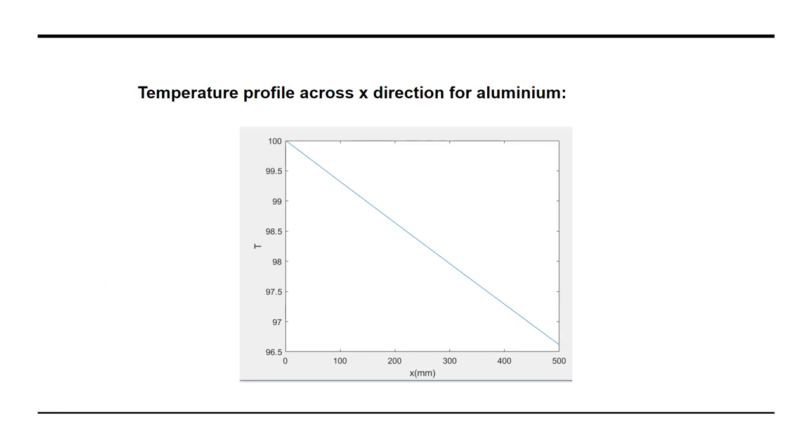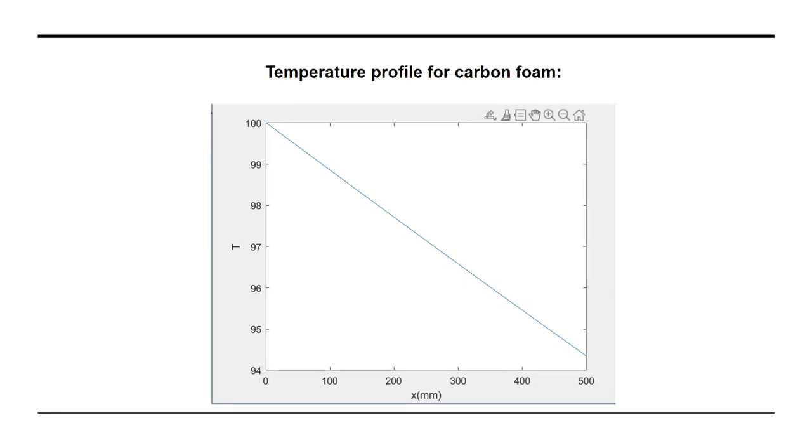By using the code in MATLAB, we obtain the temperature profile for two different materials: one is aluminium and the second is carbon foam. The temperature profile across x direction for aluminium that we obtained is shown by this graph, while the temperature profile obtained for carbon foam using MATLAB is shown here.